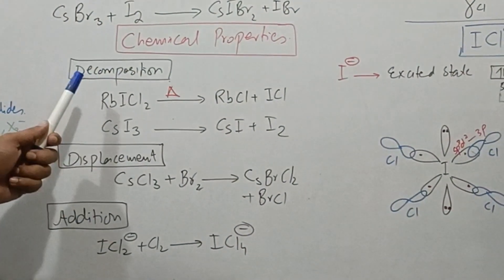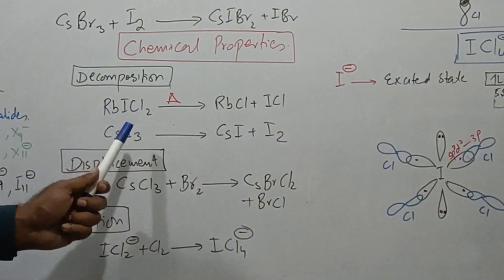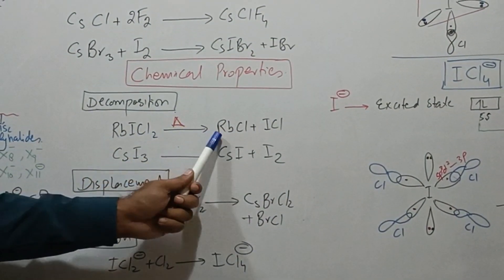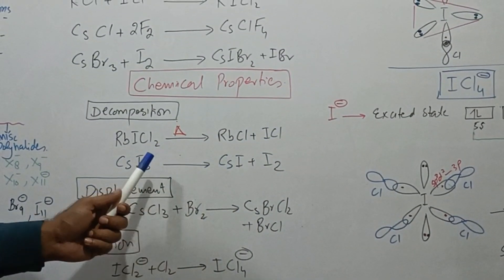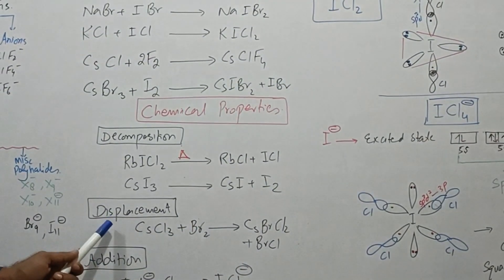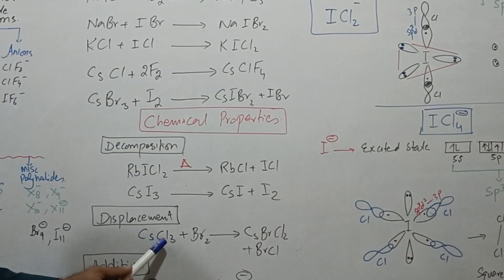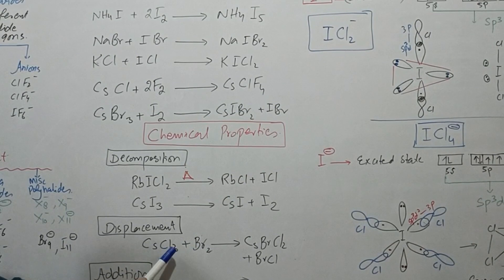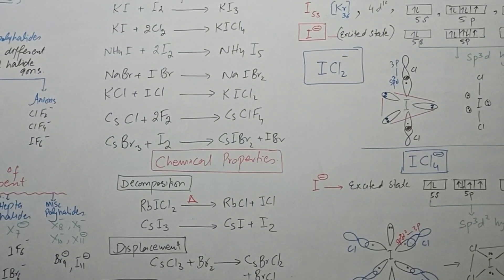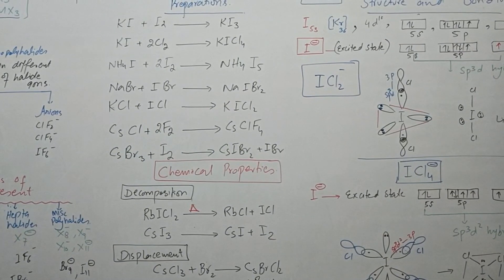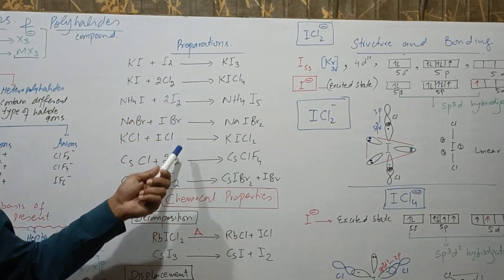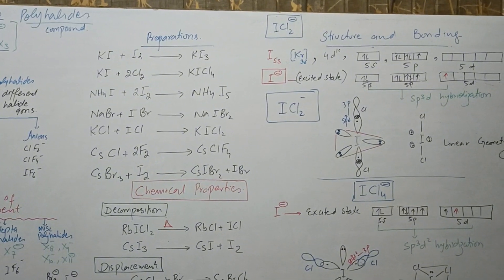A few chemical properties: upon heating, these halides may decompose. For example, when rubidium iodochloride is heated, rubidium chloride and iodochloride are produced. Similarly, cesium iodide undergoes decomposition. They also show displacement reactions — cesium chloride reacts with a halogen and one chlorine is replaced with bromine. They also show addition reactions; for example, ICl2⁻ reacts with chlorine to form an adduct.